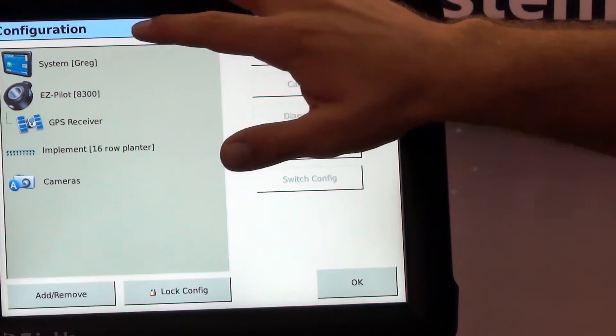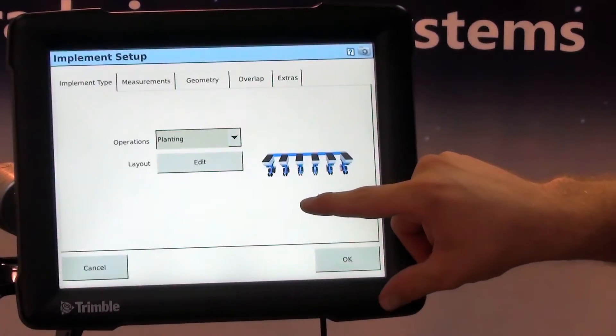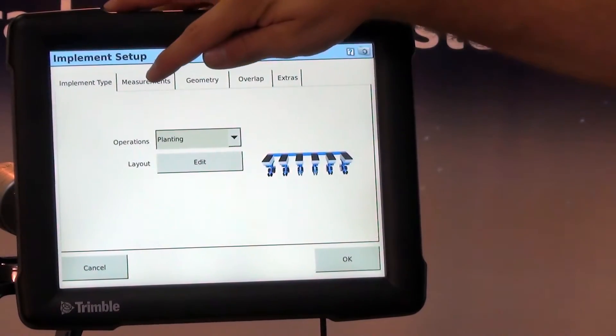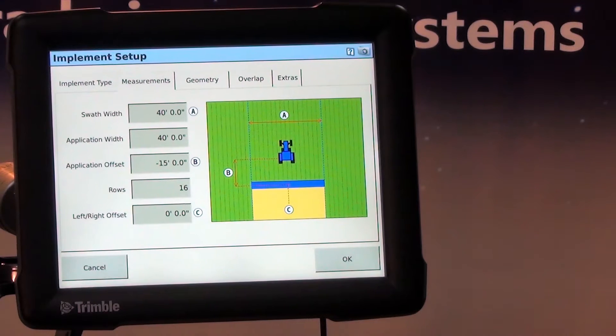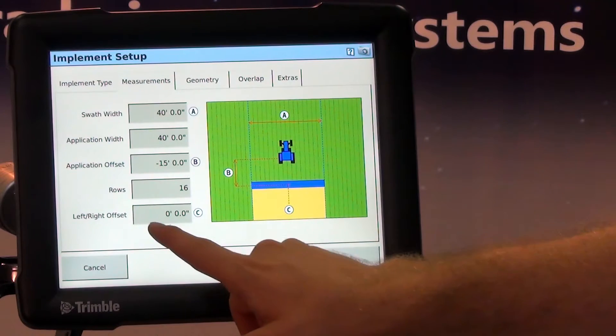I went into my configuration menu and I'm going to select implement. We're going to go to setup and then we're going to hit our measurements tab. We see all the way down here at the left we've got left-right offset.